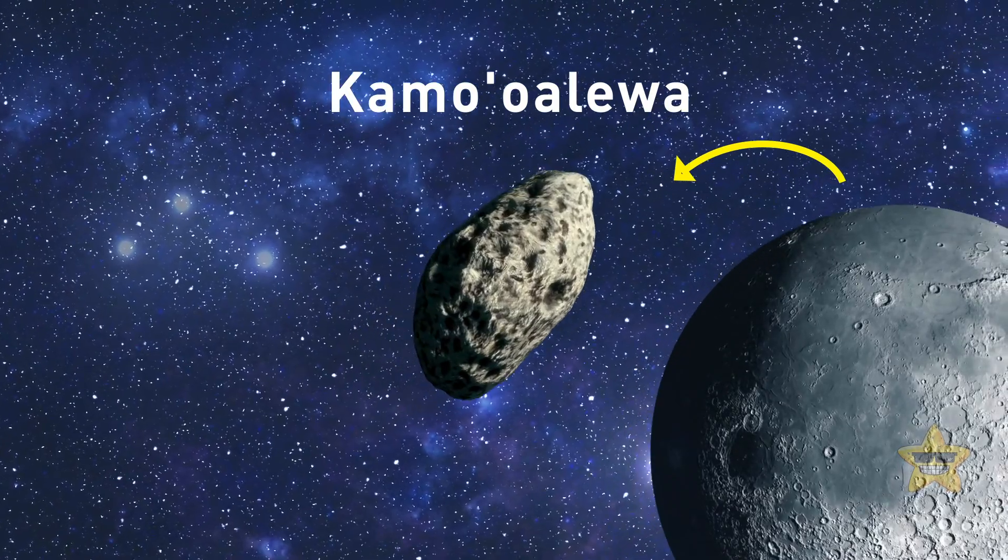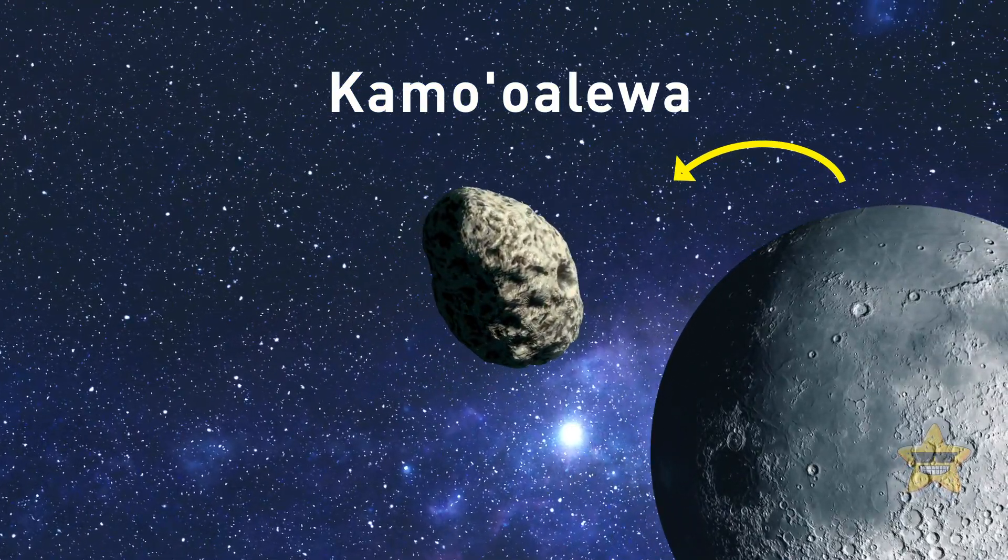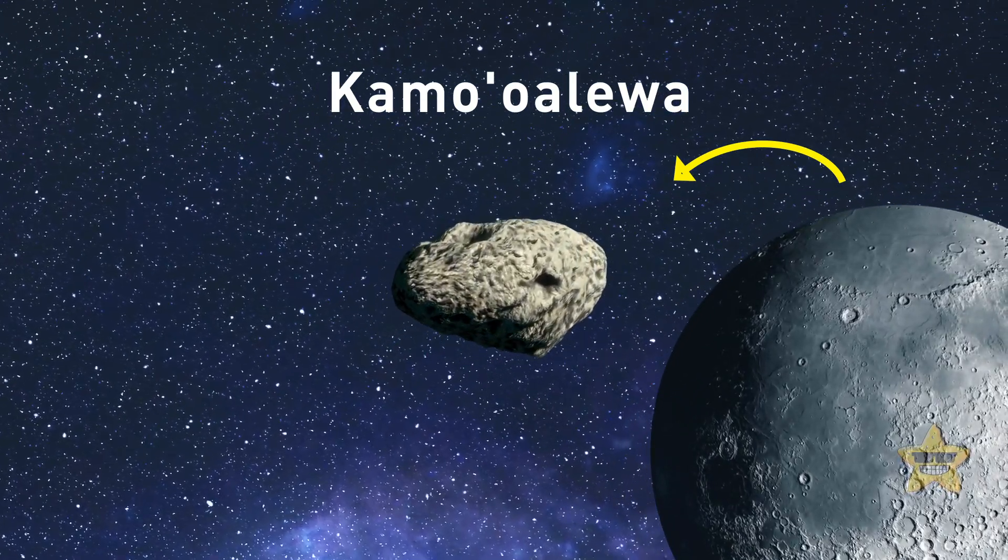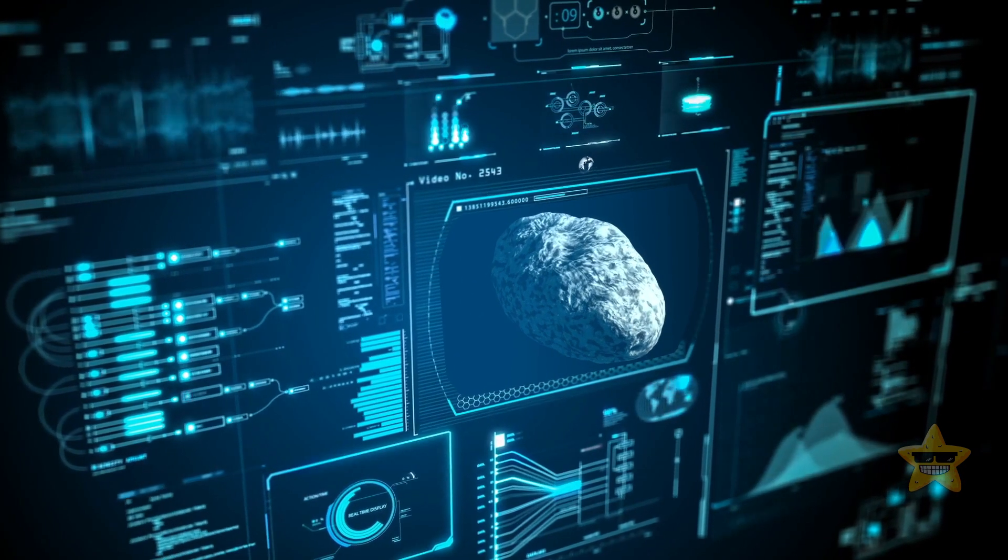There was one absolutely amazing thing about this space traveler. Astronomers suspect that this celestial body could have formed after splitting off the moon during an ancient collision with an asteroid. Yes, it means it might be a piece of our moon.